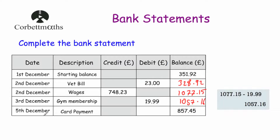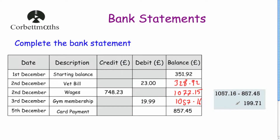Finally, on the 5th of December there's a card payment — the credit column is greyed out, so it's a debit. We know there was £1,057.16 before the payment, and afterwards £857.45 is left. Working out the difference between those two numbers tells us the payment was £199.71, which we write in as the debit.